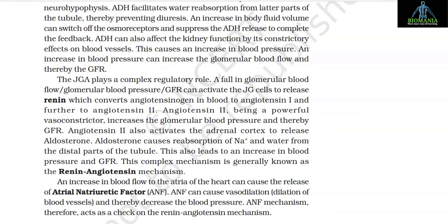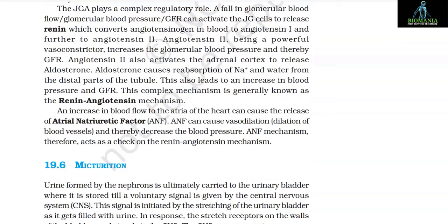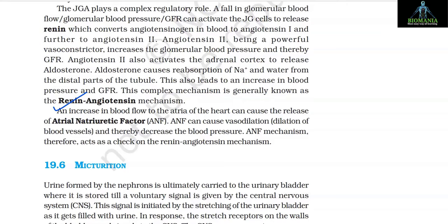The JGA plays a complex regulatory role. A fall in glomerular blood pressure or GFR can activate JG cells to release renin, which converts angiotensinogen in blood to angiotensin I and further to angiotensin II. Angiotensin II, being a powerful vasoconstrictor, increases glomerular blood pressure and thereby GFR. Angiotensin II also activates the adrenal cortex to release aldosterone. Aldosterone causes reabsorption of sodium ions and water from the distal parts of the tubule, leading to an increase in blood pressure and GFR. This complex mechanism is known as the renin-angiotensin mechanism.